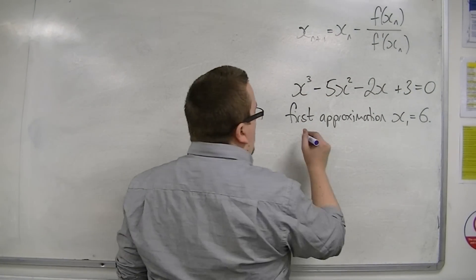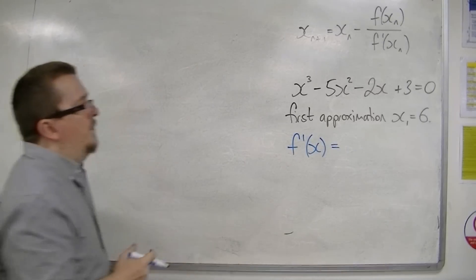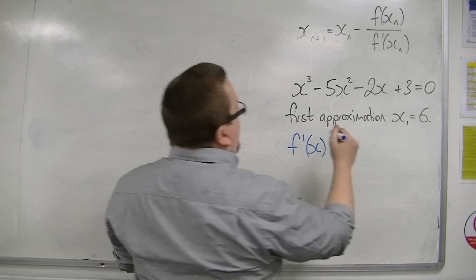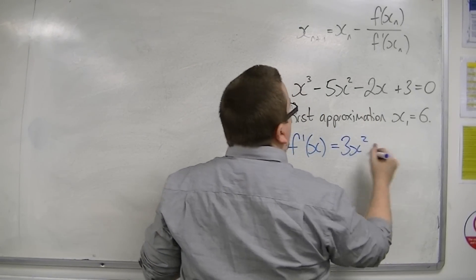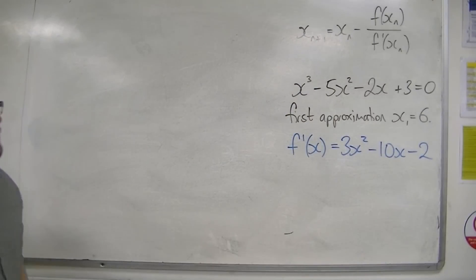So I'm going to need to know what f prime of x is through differentiating this. So we've got 3x squared minus 10x minus 2. That is the first derivative.